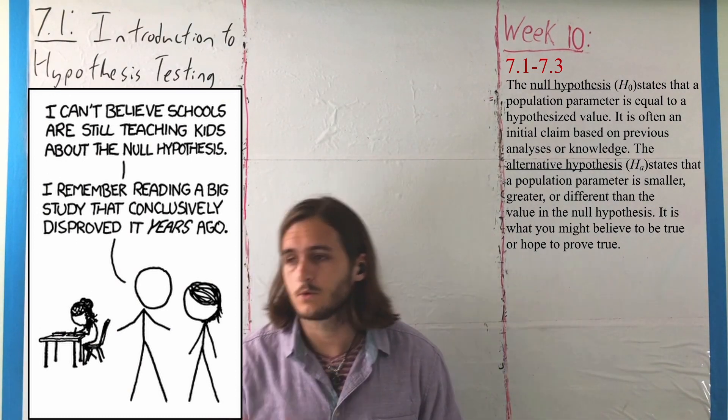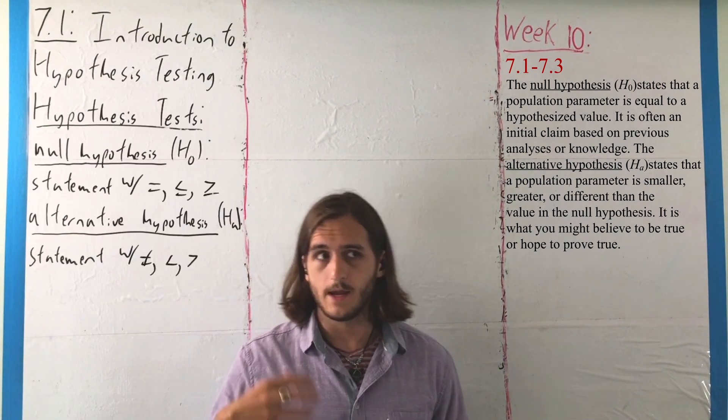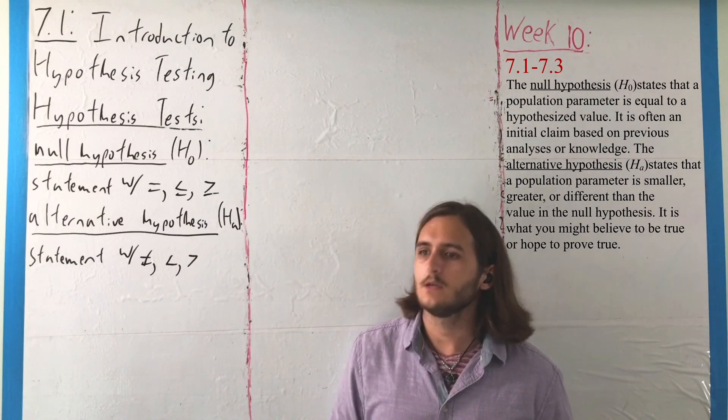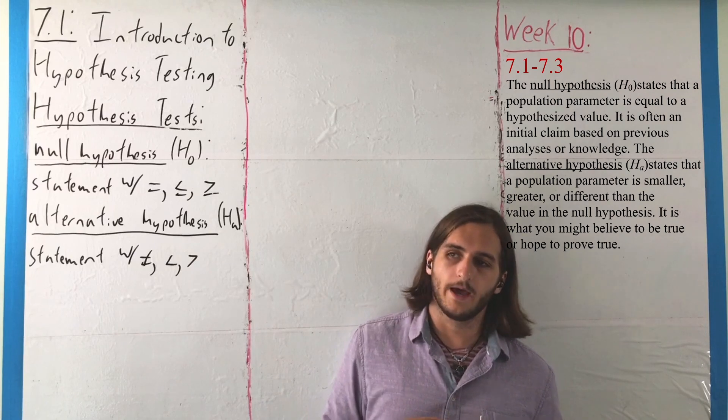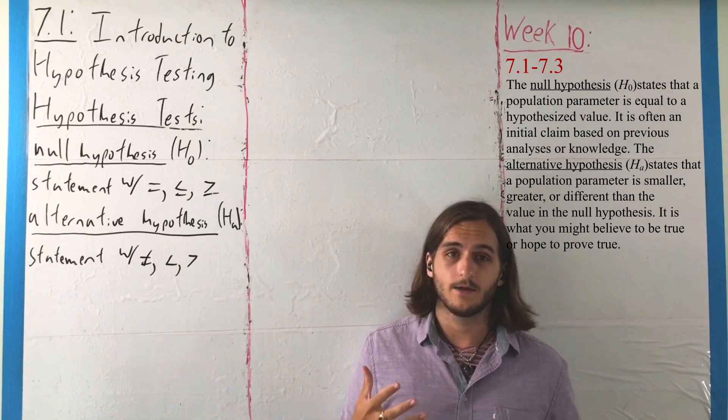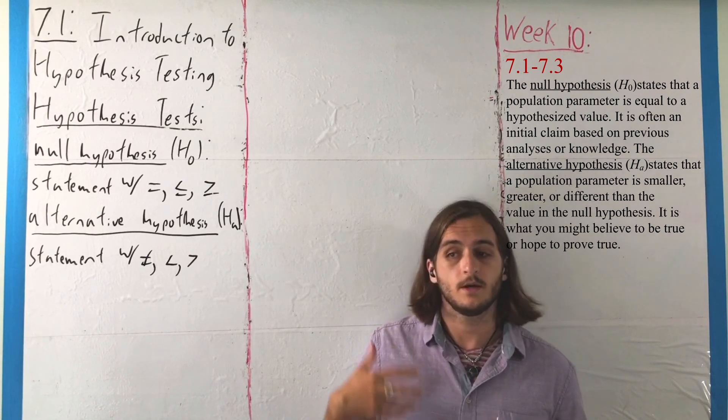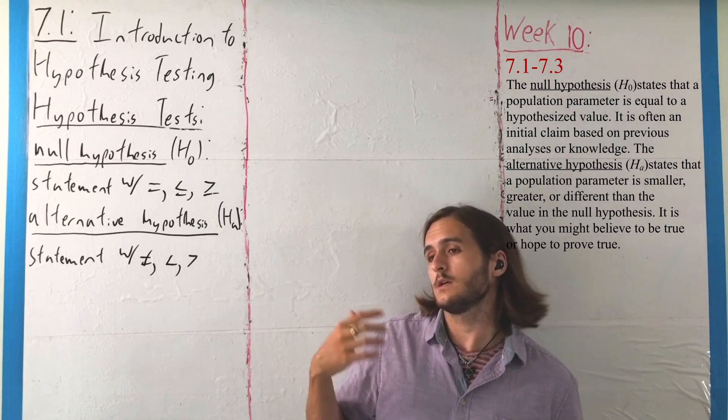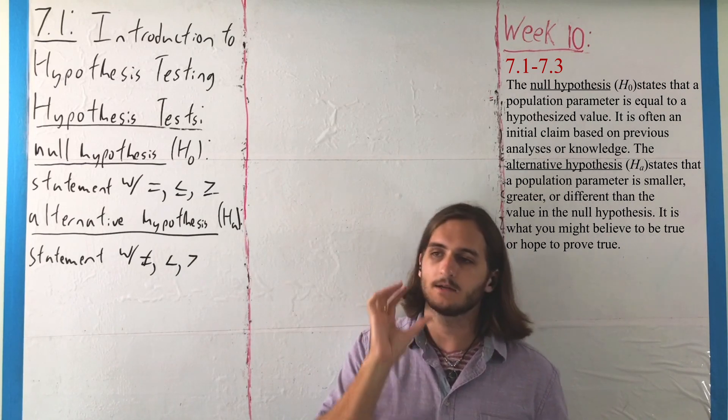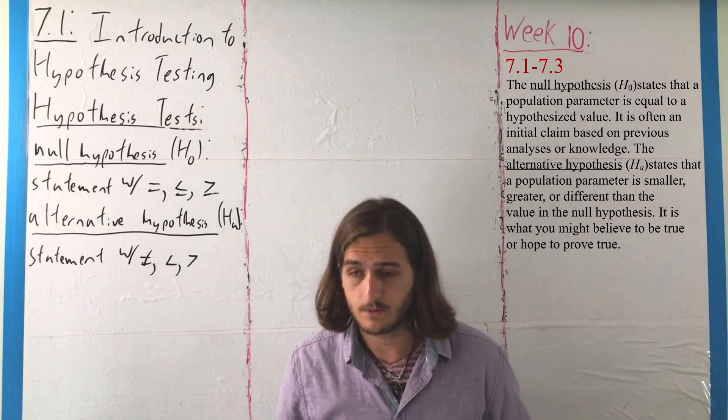First, for the null hypothesis, which we denote H0 or HO or Hnull (hypothesis null), is some statement that we have that involves an equality of a form, either is equal to, is at most, is at least—something where we are supposing there is an exact value that we expect to build around.